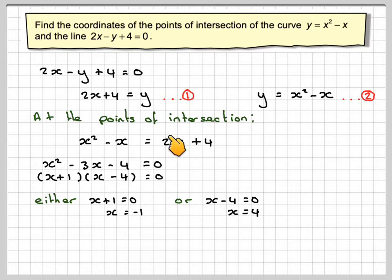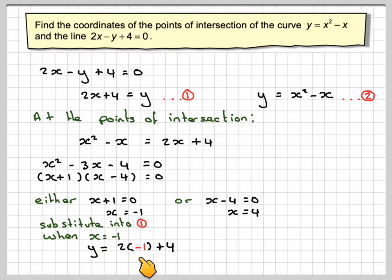We have to find the y-coordinate. Obviously, the easiest one to put it into is equation 1. So substitute into 1. We're going to get that when x is minus 1, we're going to have that y is 2 times minus 1 plus 4, which gives minus 2 plus 4, which is 2.